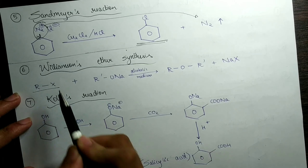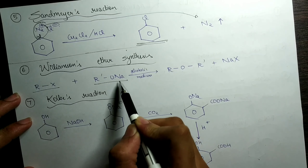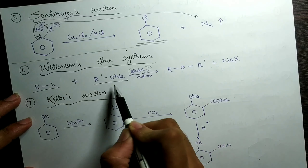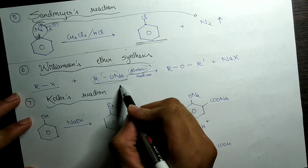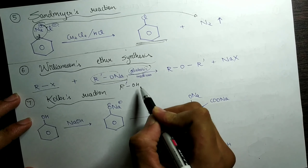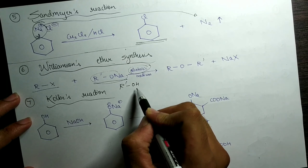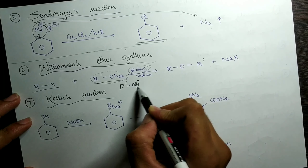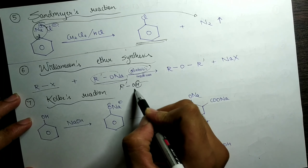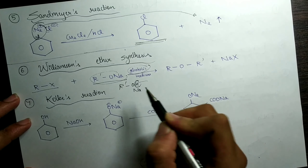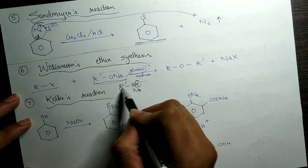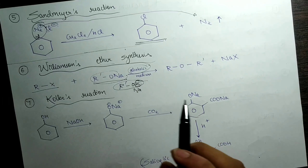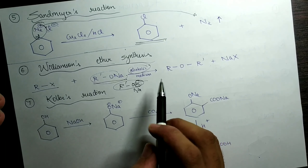Since the Wurtz-Fittig reaction is pretty easy I have not written it out especially. So we are done with technically five reactions. Let's go to the fifth one — the Sandmeyer's reaction. This is a pretty important question and may be asked in a five-mark question or as a sub-branch of a question.